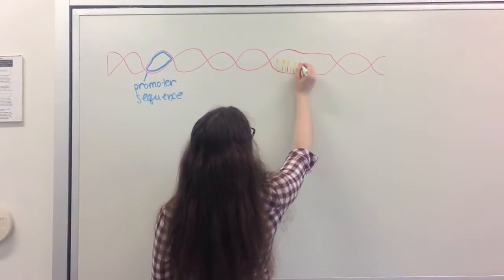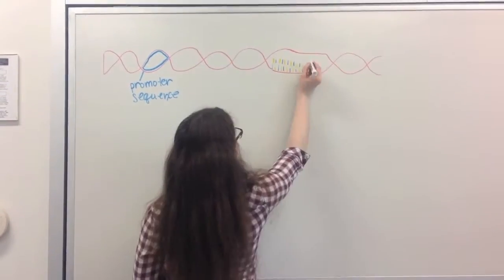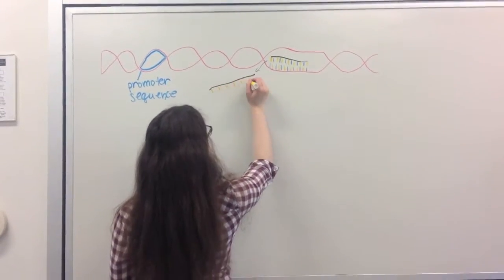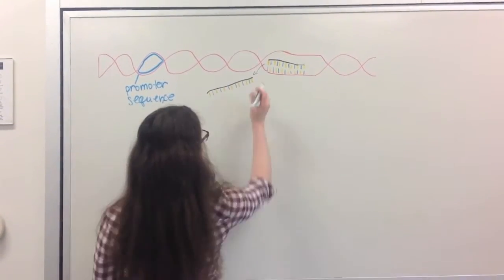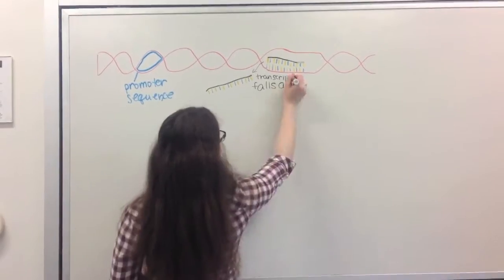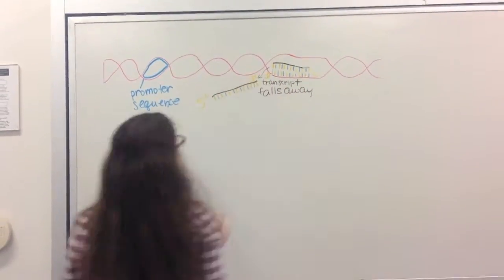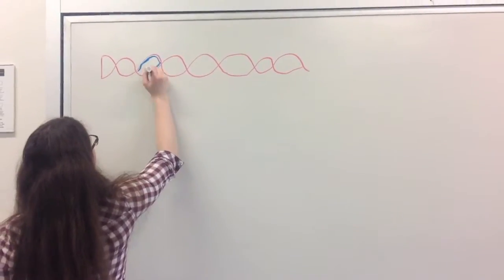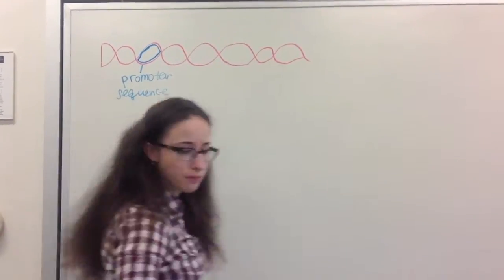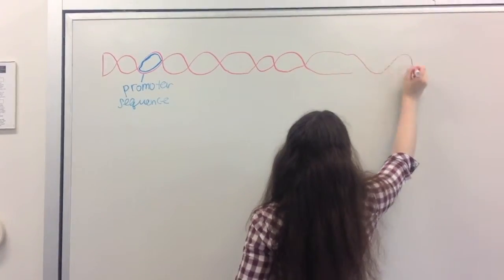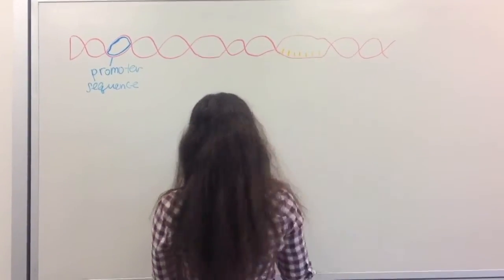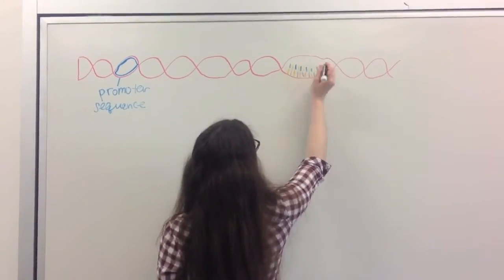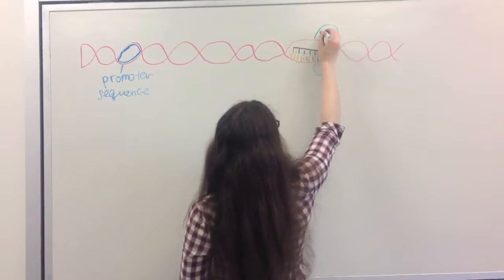The second way for termination to occur is for the transcript to fall away from the DNA strand. A third way for termination to occur is for a helper protein to pull the transcript away from the DNA strand.